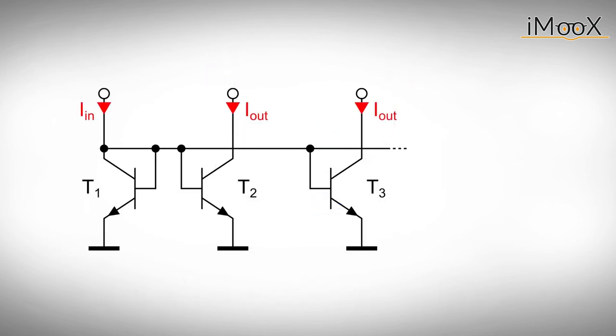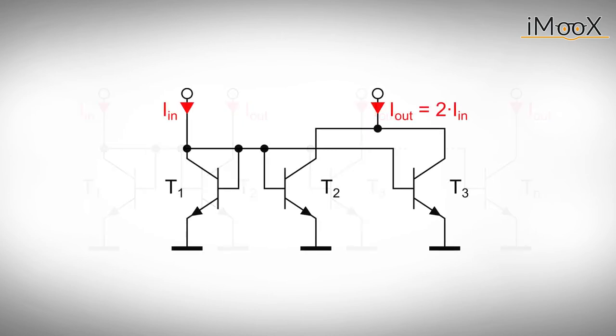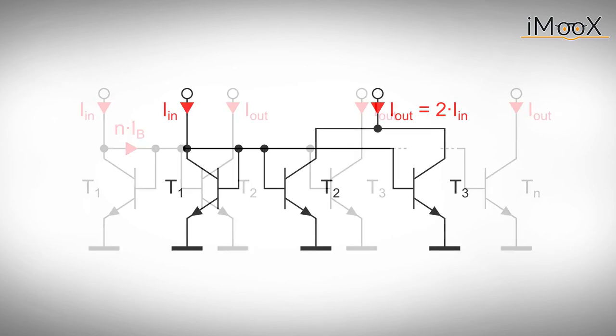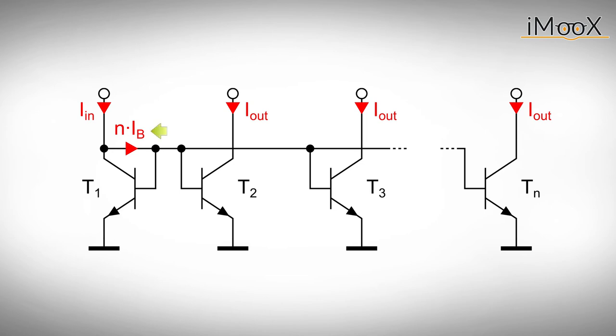But the circuit is not limited to create just one duplicate of the input current. You can add even more transistors to create a third or fourth current. And if you need a multiple of the input current, just connect two or more outputs together. But keep in mind that also the sum of base currents increases and comes closer to the input current. This affects the precision of your current mirror. So don't go crazy on the number of transistors.